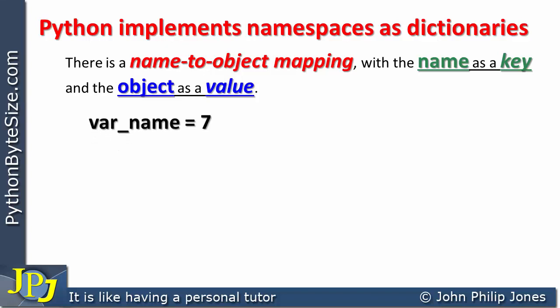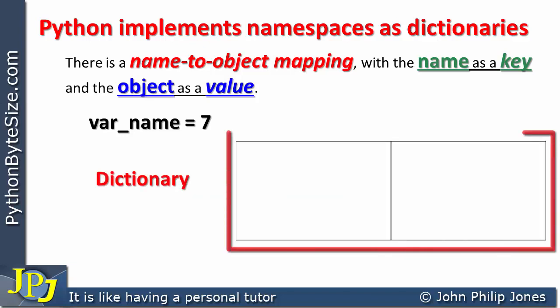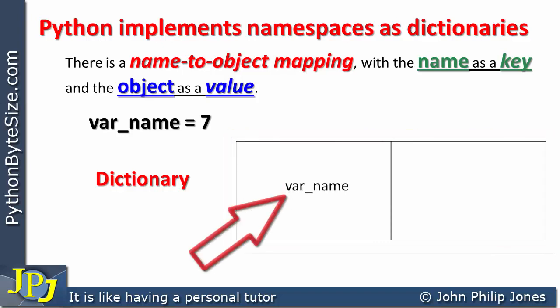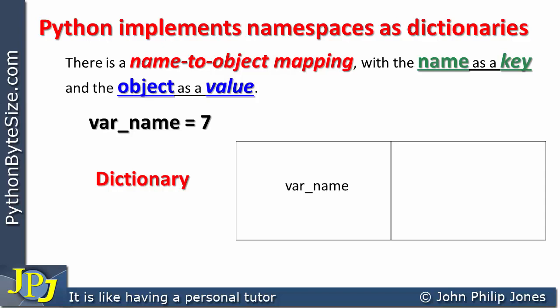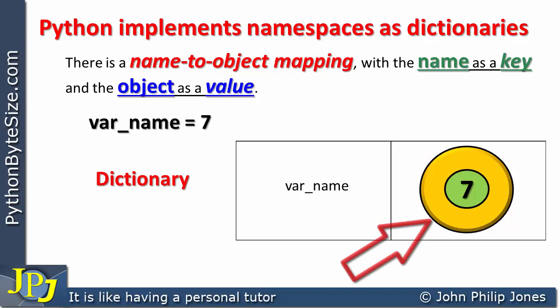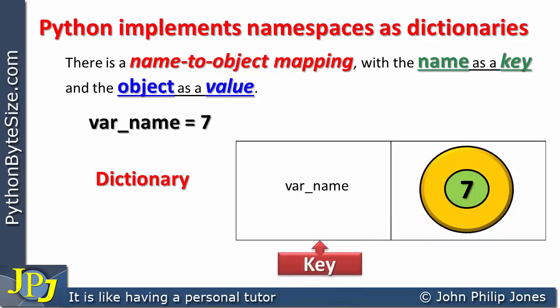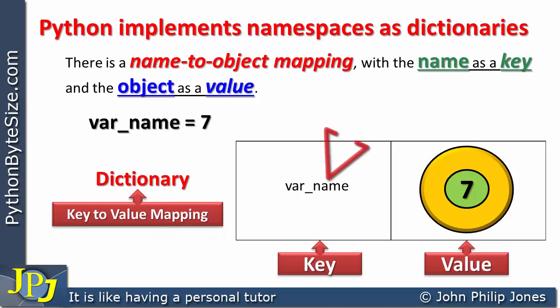Let's consider this program statement again: var_name is assigned 7. Within Python, what will happen when this program statement executes is that Python will set up a dictionary. Into this dictionary will be placed the name of the variable — in this case, var_name. Associated with this identifier will be the instance of the integer class with the value of 7. Because we have a dictionary here, we have to remember that a dictionary has a key and a value, which means if you want to get at the value, you have to go via the key. In this case, the name is the key.